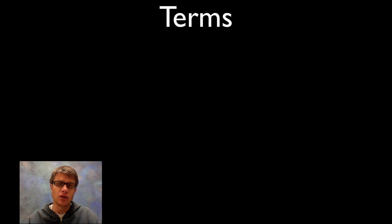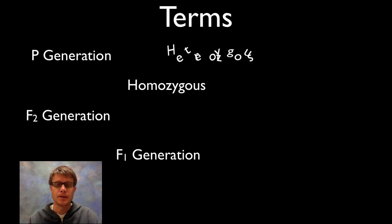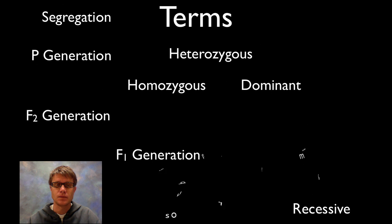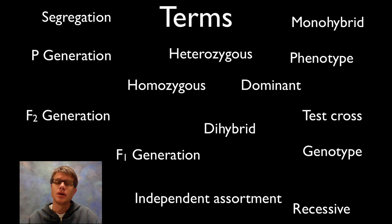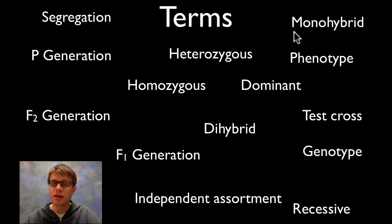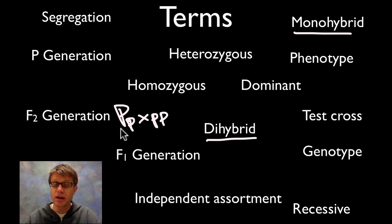I'm going to assume that you know some basic terms in genetics — let me flash these terms up here, and if there are some you don't understand, make sure you take a look at those. When I did this in class there were a few stumpers. Some kids were confused by the difference between a monohybrid and a dihybrid cross. A monohybrid cross would be something like crossing purple pea plants — since I'm studying just one trait or one gene, we call that a monohybrid cross.